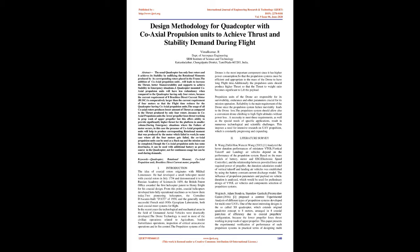is comparatively larger than the current requirement of four motors, so that the flight time reduces for the quadcopter having coaxial propulsion units. The usage of all coaxial rotors produces a lesser amount of thrust compared to only four rotors, because in coaxial propulsion units the lower propeller loses thrust working in prop wash of the upper propeller. However, this offers the ability to provide significantly higher thrust for the platform in smaller volume. During emergency situations where motor failure occurs, the presence of coaxial propulsion units will help produce the corresponding rotational moment. Though the coaxial propulsion units have some drawbacks,